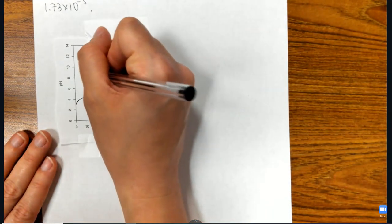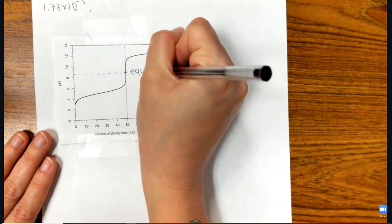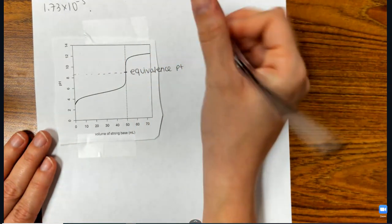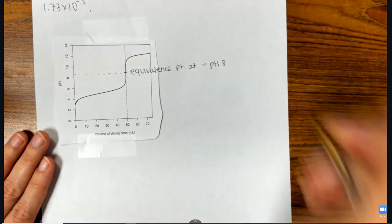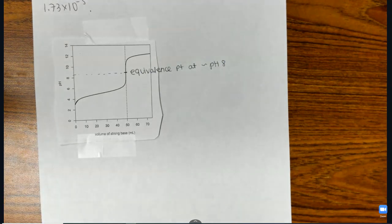And so when I look at that, the equivalence point is not at a pH of 7. The equivalence point is at like a pH of a little above 8, which is true for weak acid-strong base titration.